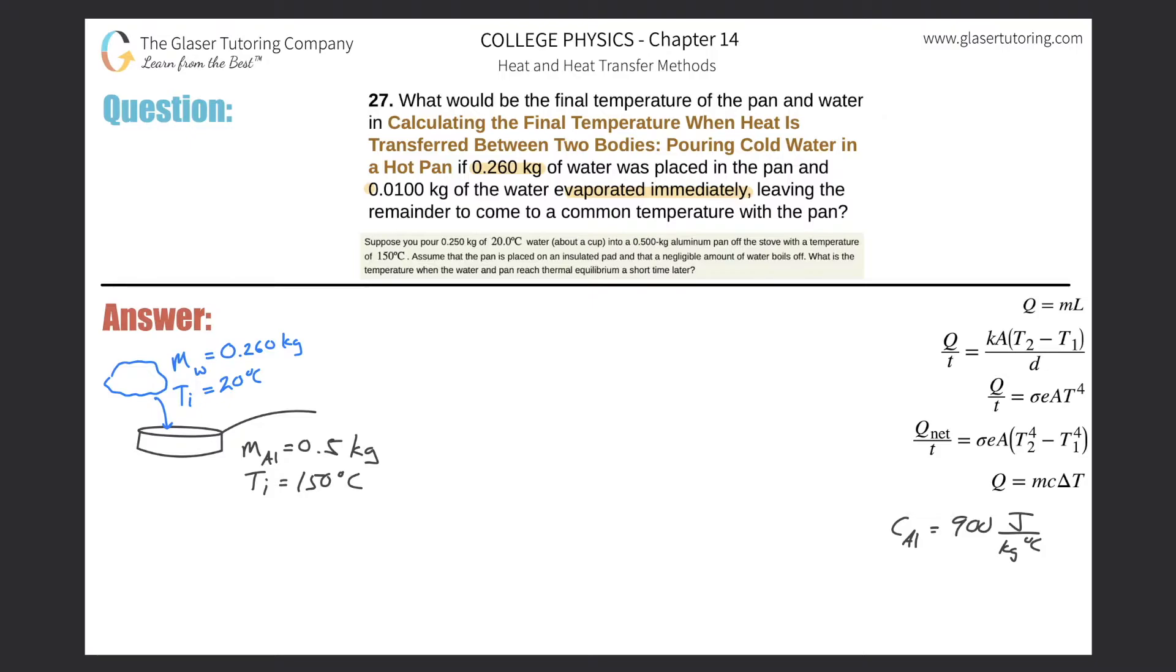It's going to be placed in a pan, and as soon as it's placed in the pan, 0.01 kilograms will evaporate and turn into gas. They also tell us information about the aluminum pan itself - we have the mass of the pan and the initial temperature of the pan.